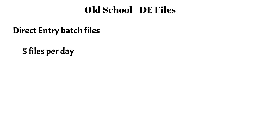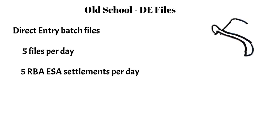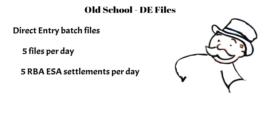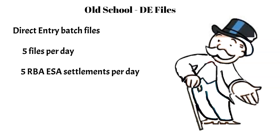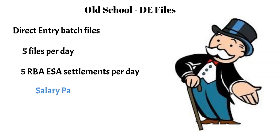The oldest interbank payment method is direct entry. Tier 1 banks interchange direct entry files with each other five times per business day, each batch followed by settlement via the exchange settlement accounts at the RBA. It is typically used for batch payments such as company payroll credits and periodical debits such as insurance premiums. Customer-to-customer payments which use a BSB and account number may also be processed via direct entry.